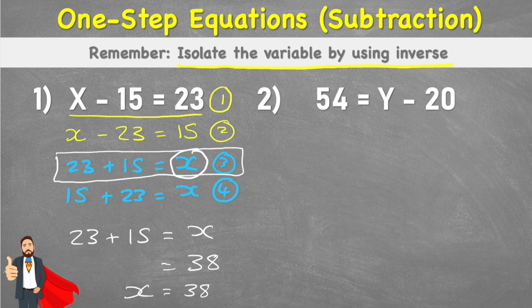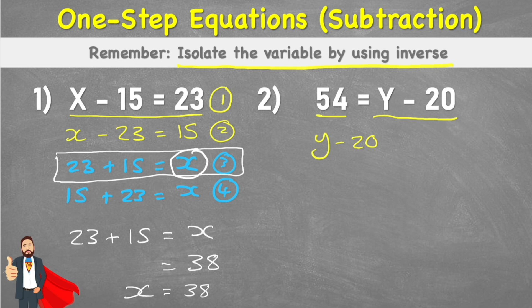We can look at one of the addition sentences where x is already on its own: 23 plus 15 equals x, and therefore x equals 38. That's one method, but it can sometimes be hard to find those number families. For question two, we have 54 equals y subtract 20. We can rewrite this as y minus 20 equals 54, which looks more traditional.